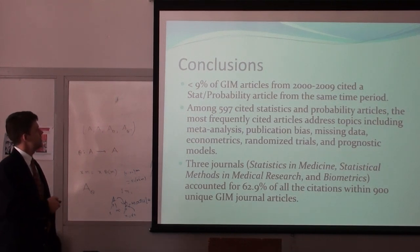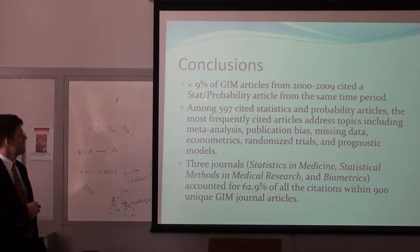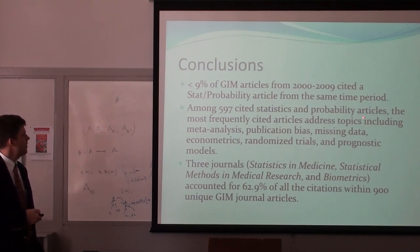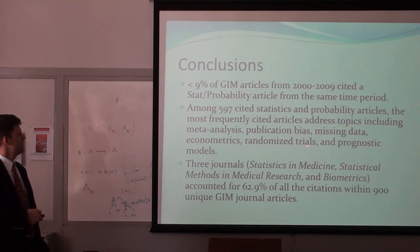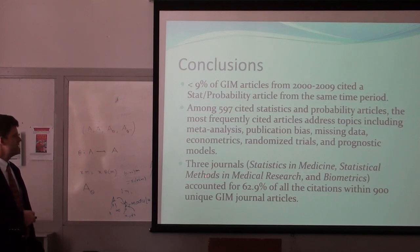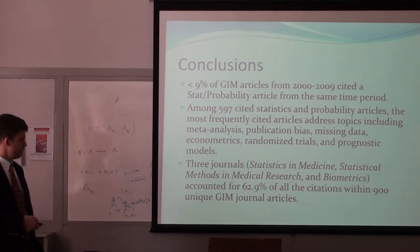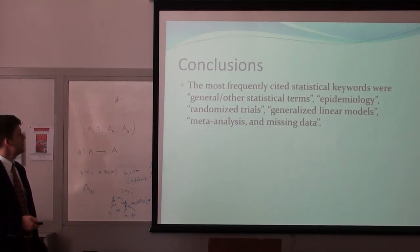In conclusion, less than 9% of articles in these general internal medicine journals cited a statistics and probability article. Among about 600 cited articles, the most frequently addressed topics were meta-analysis, publication bias, missing data, econometrics, randomized trials, and prognostic models. Three journals — Statistics in Medicine, Statistical Methods in Medical Research, and Biometrics — accounted for almost 63% of the citations.